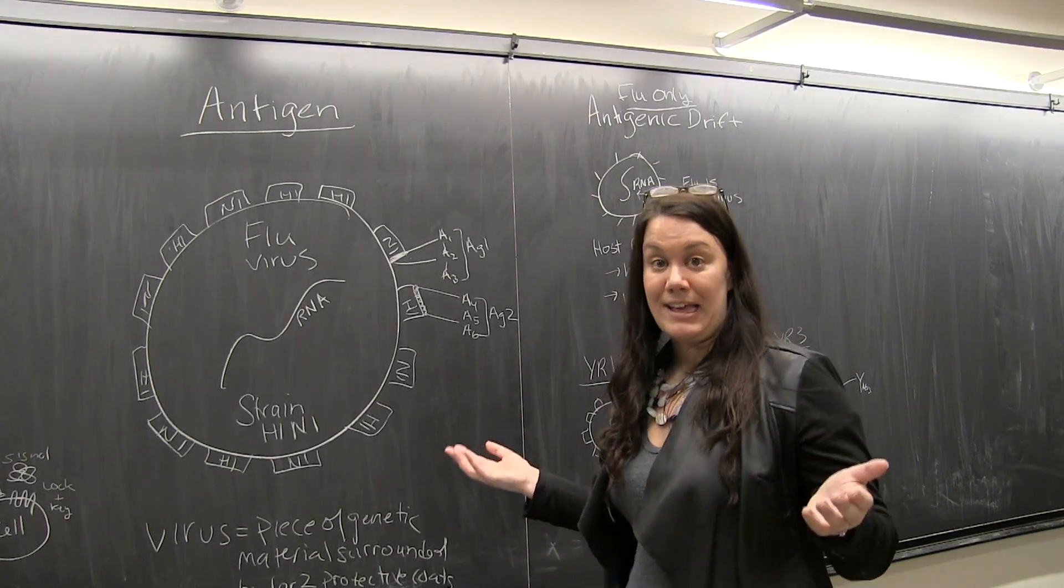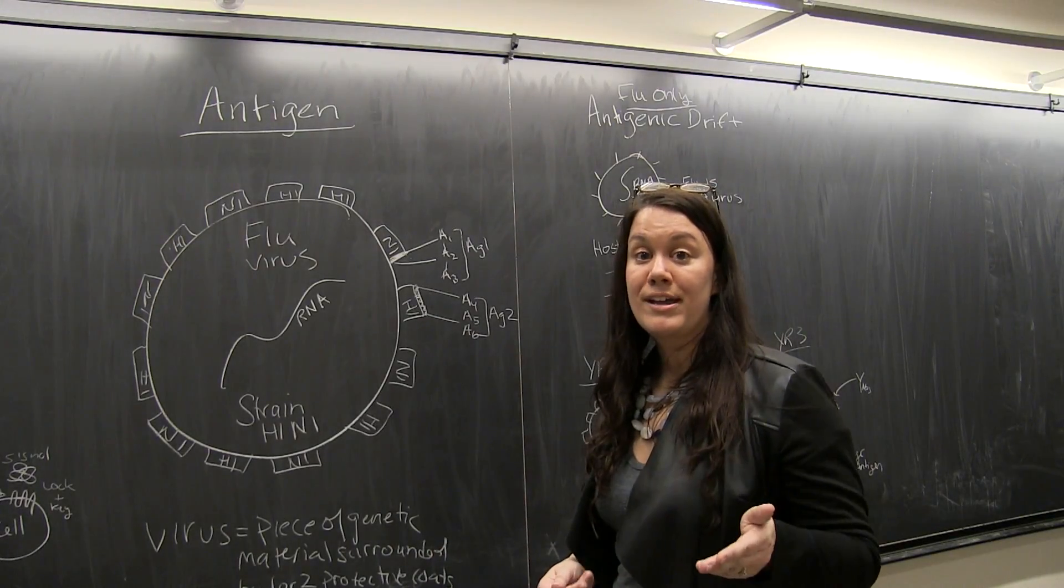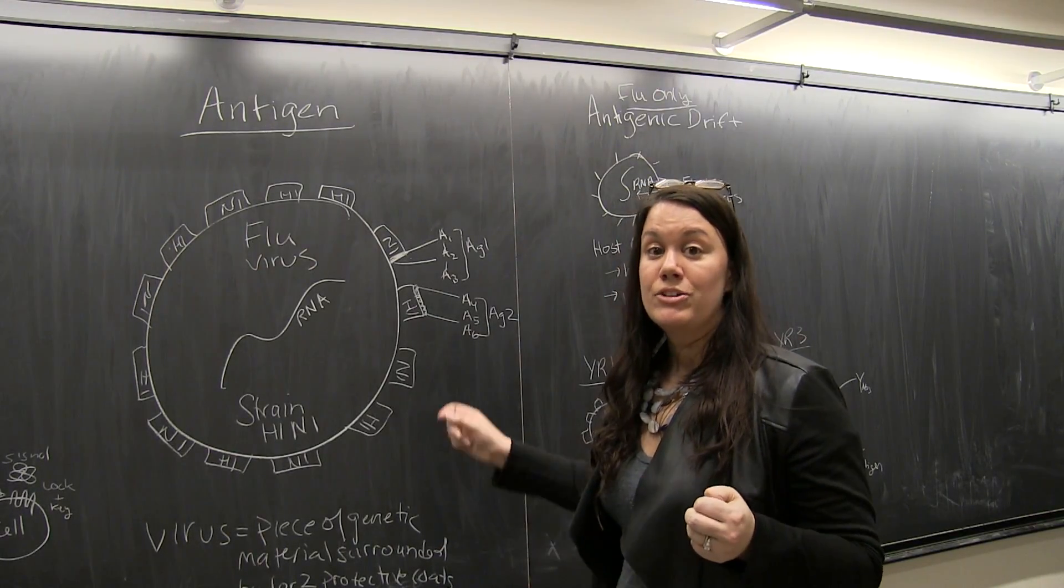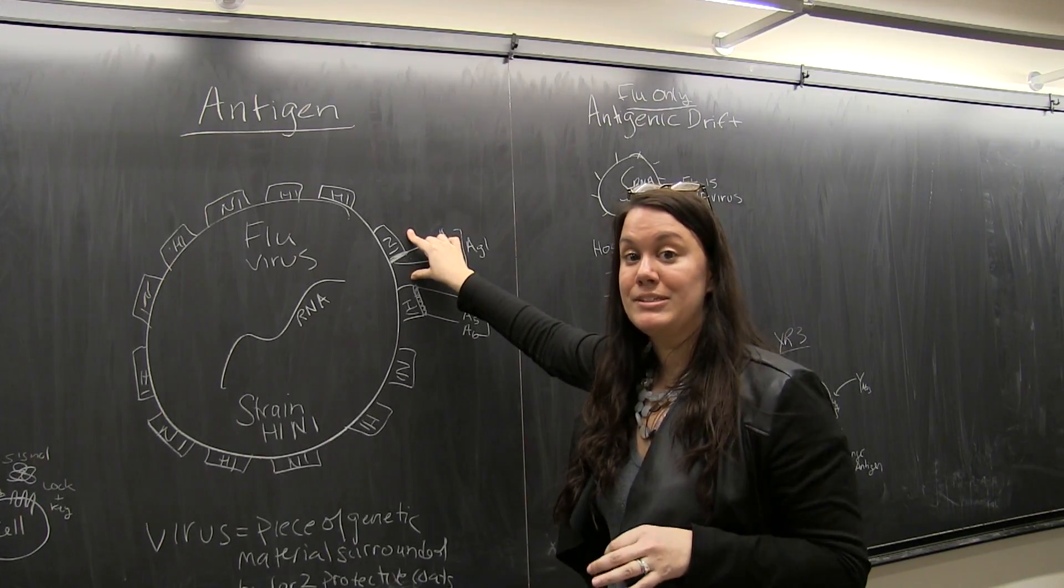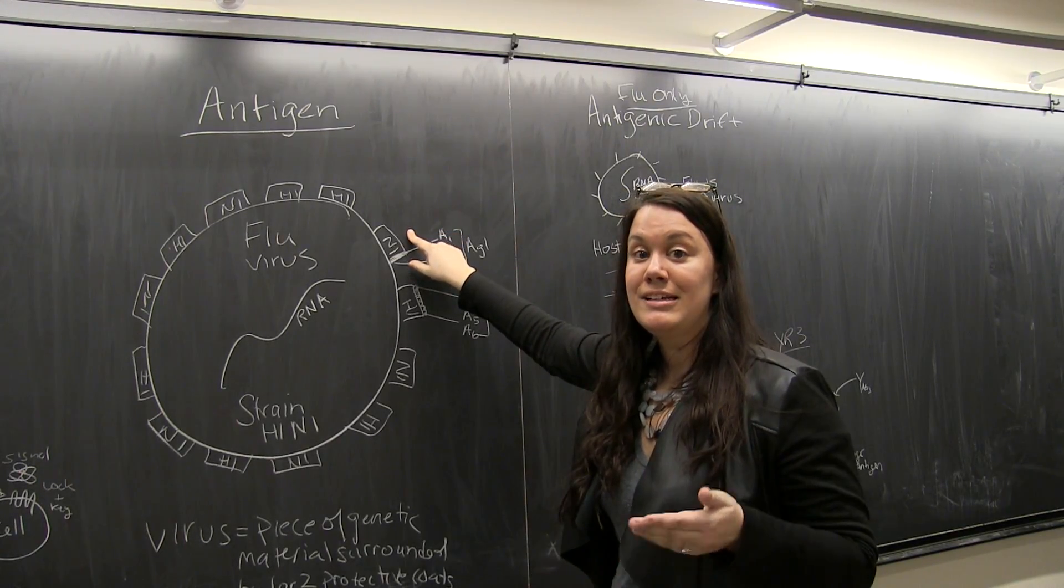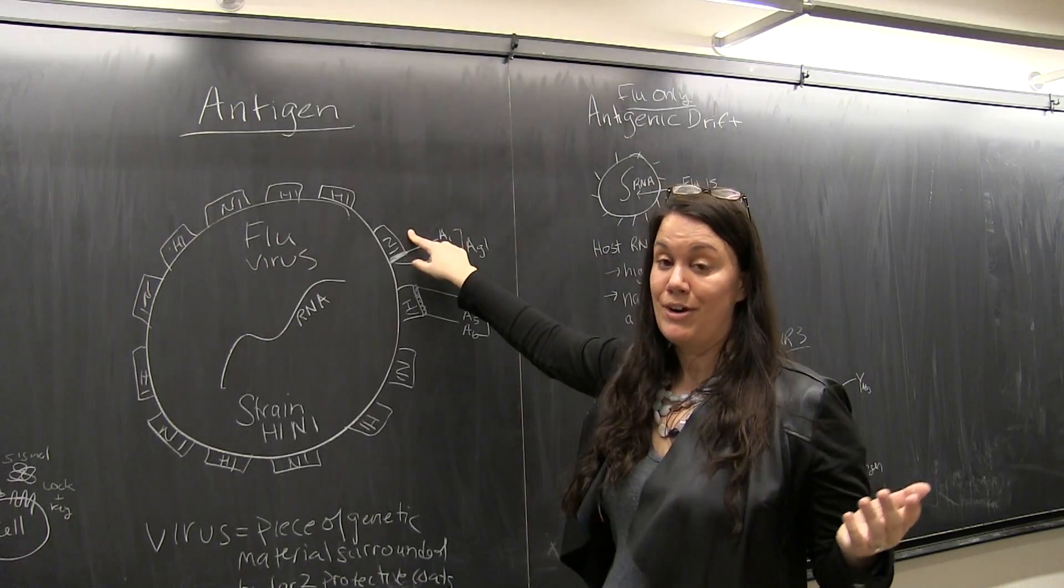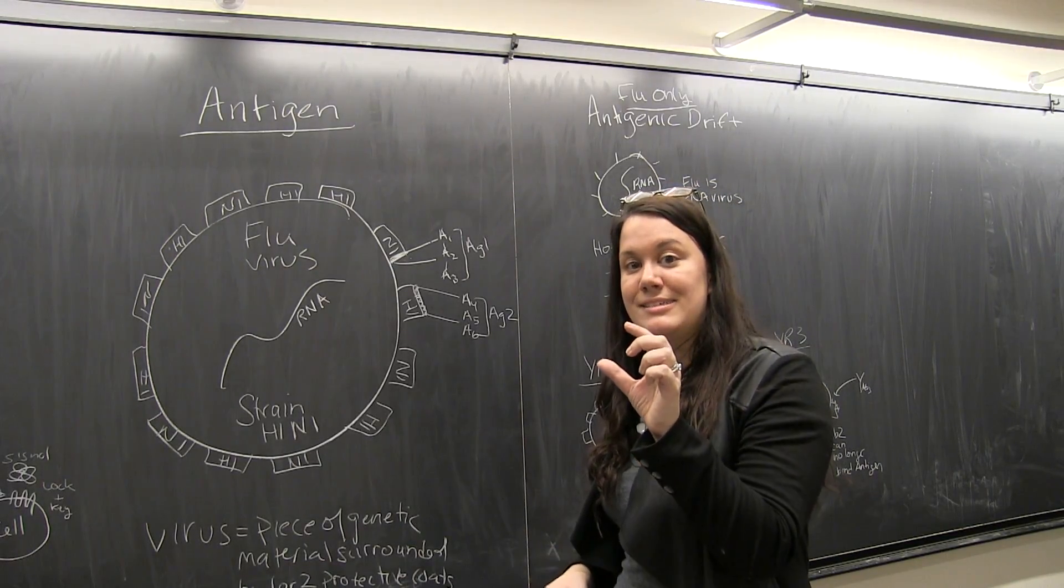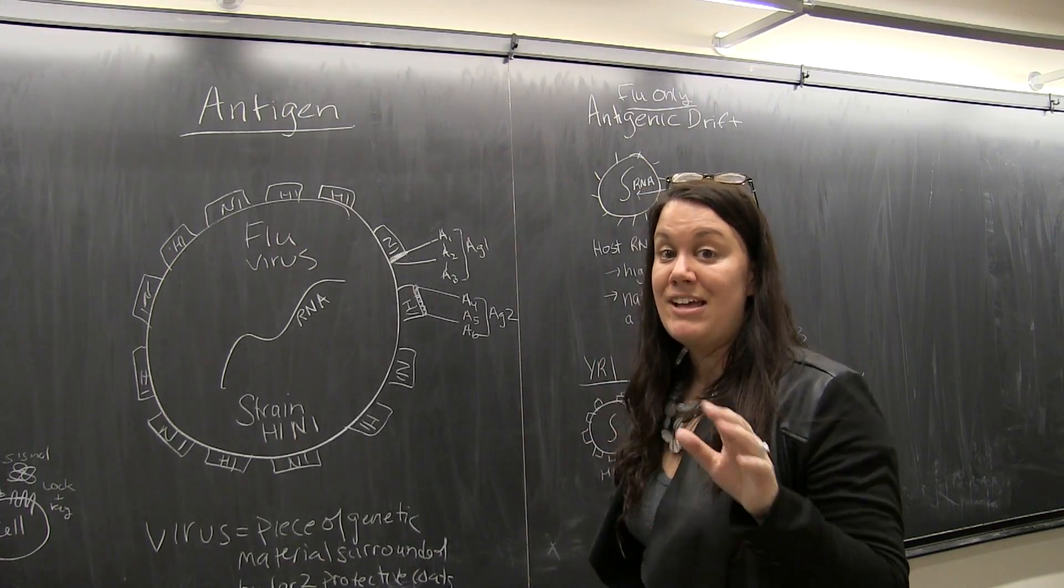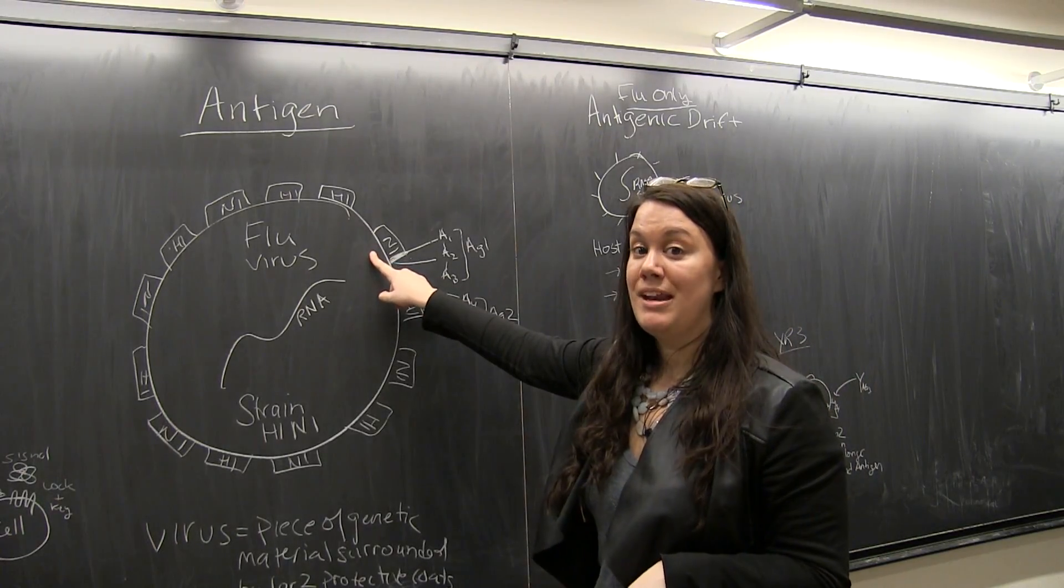So what an antigen is in this case is, again what I said, anything that the body will recognize as both foreign and harmful. So these H and N membrane proteins, they are inherently different than animal host cell proteins, which is a very good thing. So our body can recognize little short pieces of these receptors as foreign and harmful.